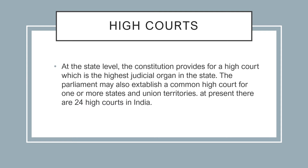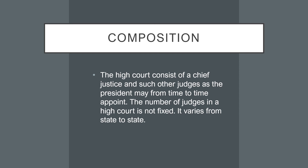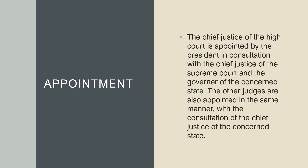At the State level, the Constitution provides for a High Court, which is the highest judicial organ in the State. The Parliament may also establish a common High Court for one or more States and Union territories. At present, there are 24 High Courts in India. The High Court consists of a Chief Justice and such other judges as the President may appoint from time to time. The number of judges in a High Court is not fixed — it varies from State to State. The Chief Justice of the High Court is appointed by the President in consultation with the Chief Justice of the Supreme Court and the Governor of the concerned State.